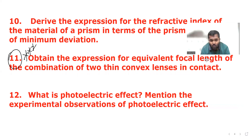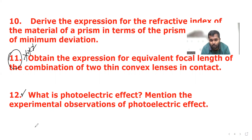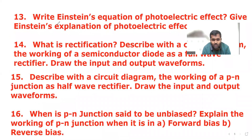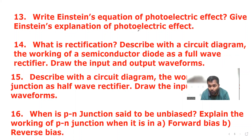The twelfth question: what is photoelectric effect? Mention the experimental observations of photoelectric effect. This question is taken from the dual nature of radiation and matter chapter. From this chapter there are no direct five-mark questions, but sub-questions are expected based on previous year papers. The thirteenth question, also from the dual nature chapter: write Einstein's equation of photoelectric effect and give Einstein's explanation of photoelectric effect. Sometimes this question comes for three marks, and if combined it may be asked for five marks.